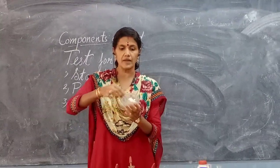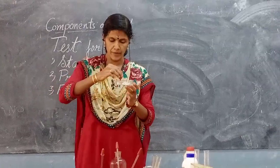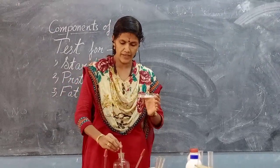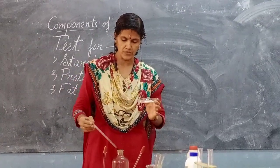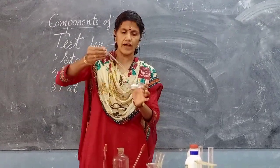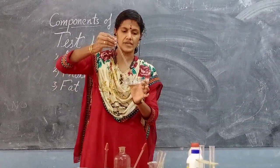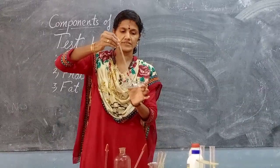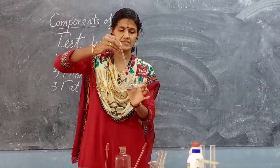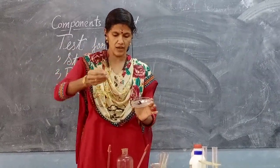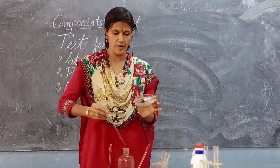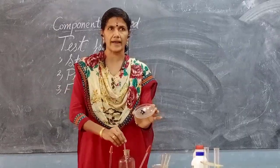Now I am taking another type of starch — that is our cooked rice. When I put some drops of iodine solution in it, you can see the changes — see how it becomes blue-black color.